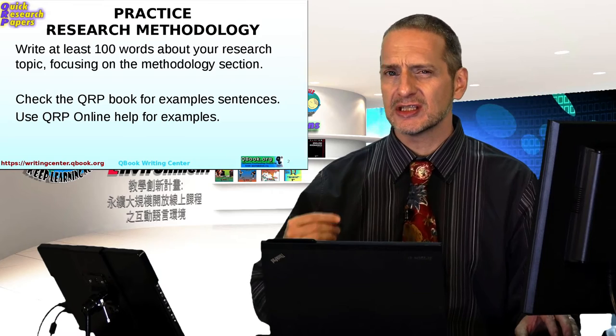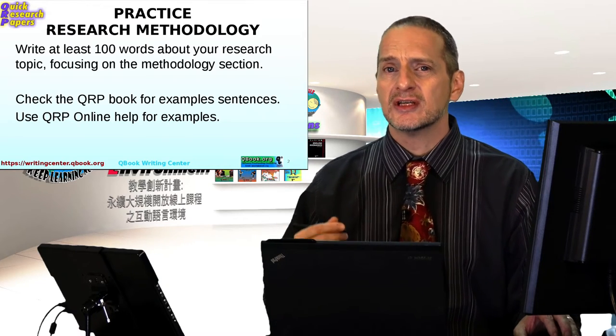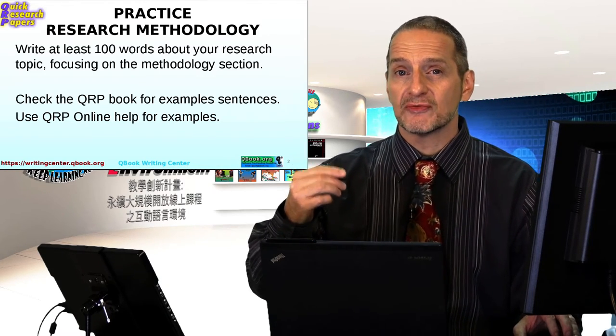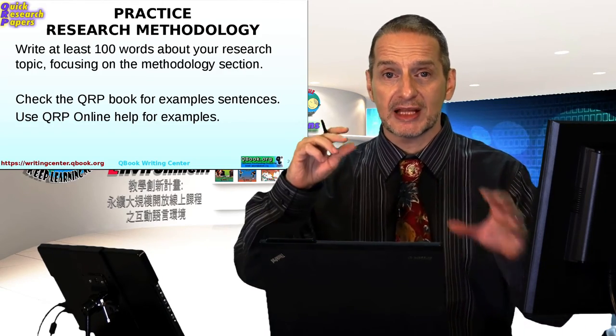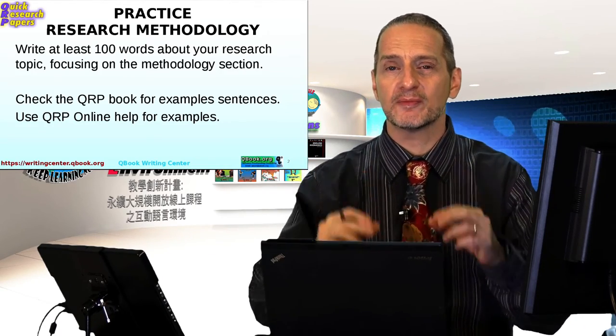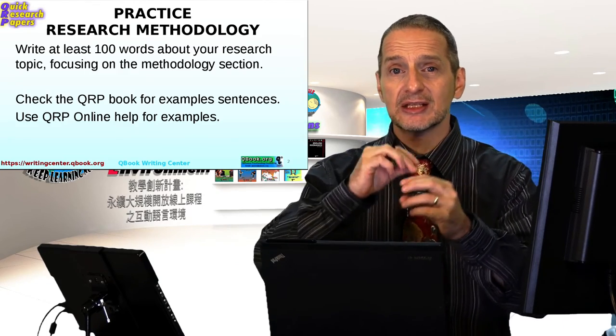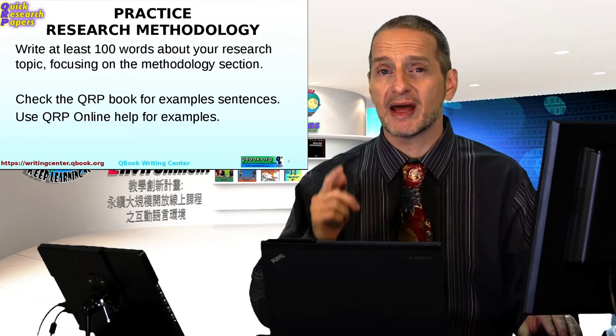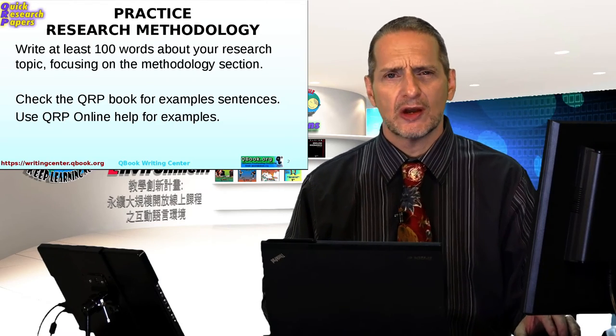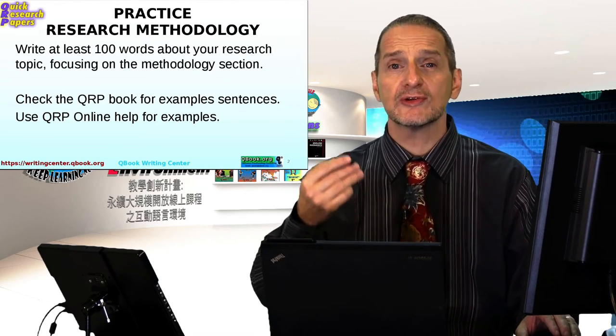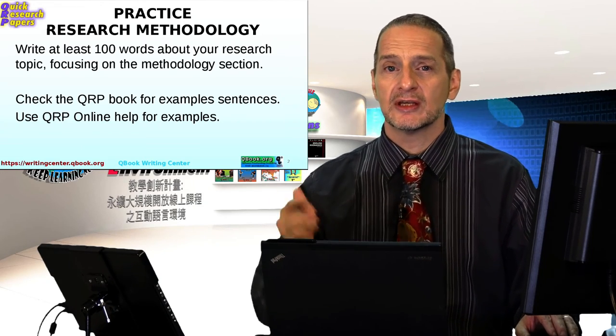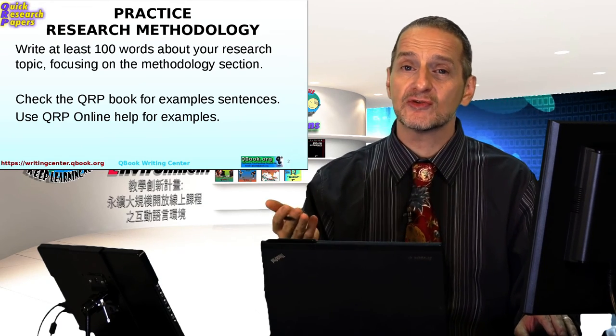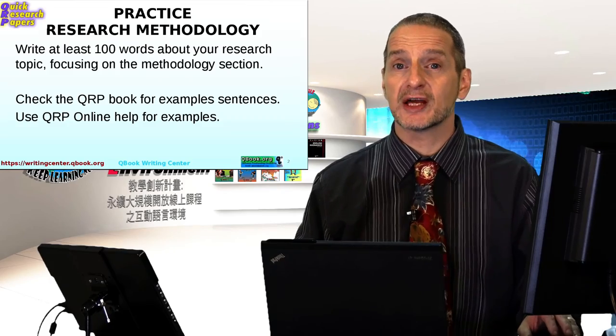Remember, the methodology can be a little bit technical, so don't be shy to try to find the right words. In the QRP system, we have that little yellow box that can help you. Don't be afraid to copy some sentences and then change the detail to match your research. Remember, if you're really doing research, you can do your real topic. And if you're not a research student, you can pick a topic that you're kind of interested in. Use Google Scholar to find one, maybe.